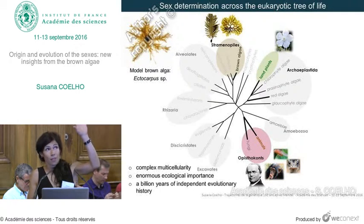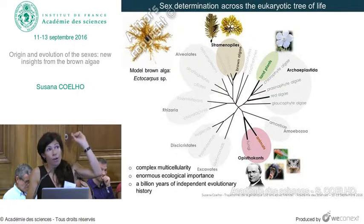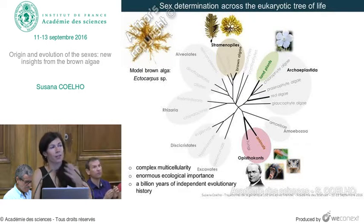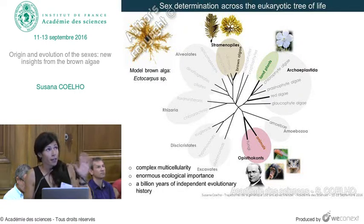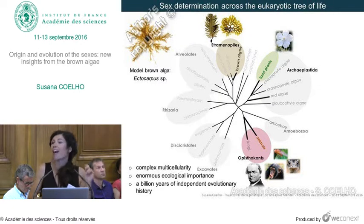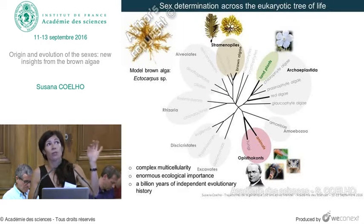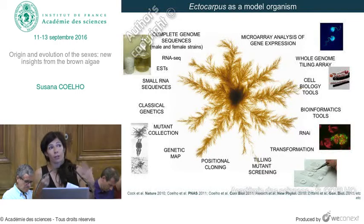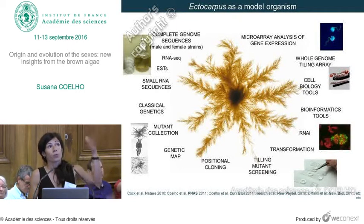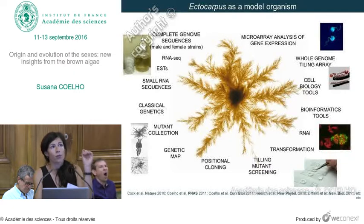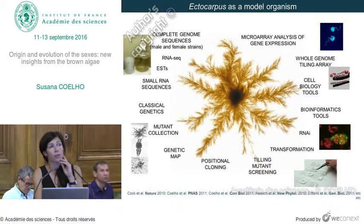Brown algae are interesting for this phylogenetic aspect and have enormous ecological importance for oxygen production in coastal areas. There's another advantage: there is a model brown alga — it's not as sophisticated as Drosophila or Arabidopsis, but it's a small alga we use as a model system. For the last years in Roscoff, in collaboration with a number of labs, we've developed this alga as a model organism and developed genomic, genetic, and reverse genetic tools. We used it to understand how sex is determined in this group so distantly related to plants and animals.